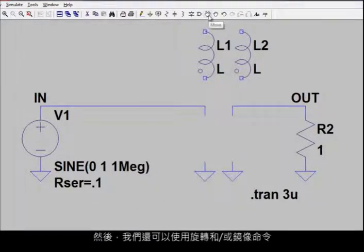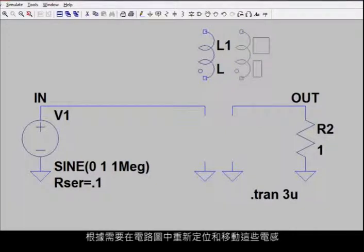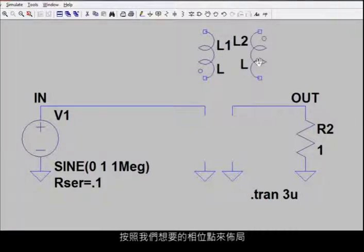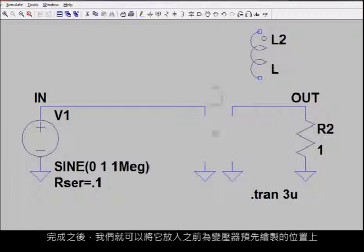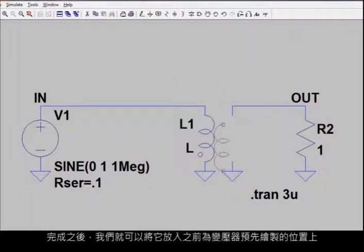We can then also reorientate, move and position these as we need to in our schematic by using the rotate and mirror command to lay things out the way we want in terms of the phase dot. We may also need to move some of these symbols and values around to line things up, and once we've done that, we can place it in the transformer slot.